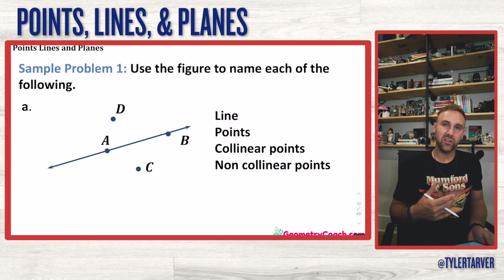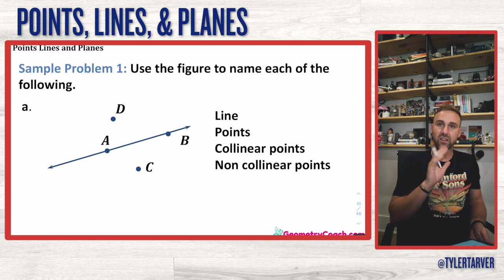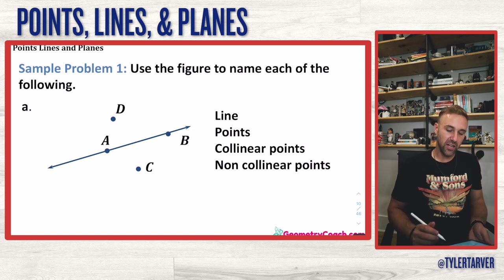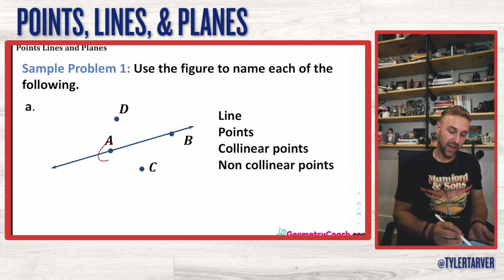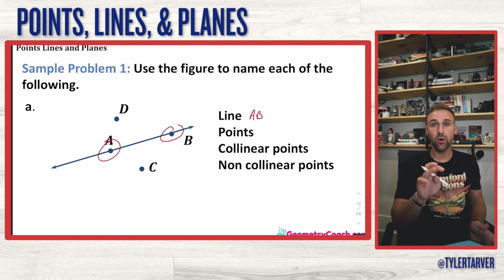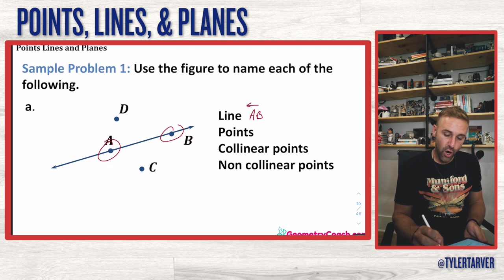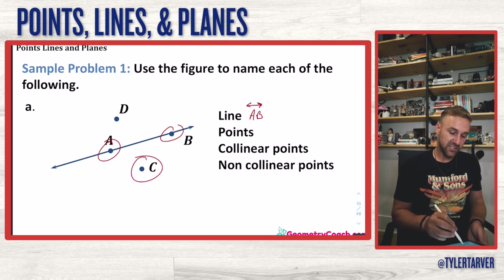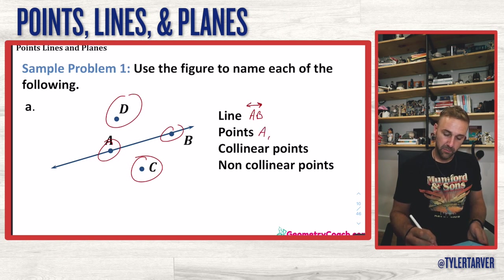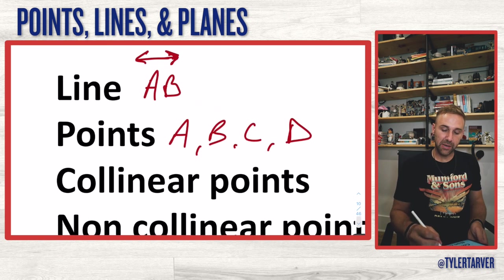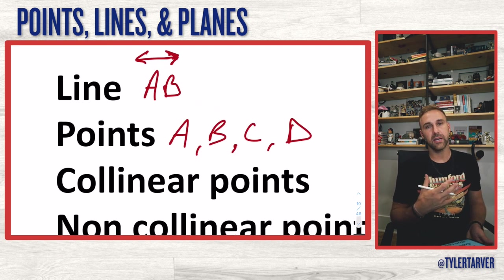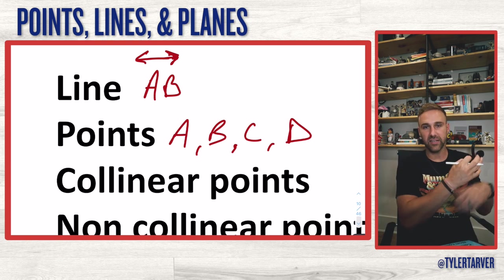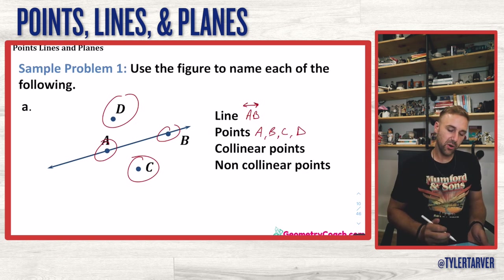Let's do some example problems — you can pause and work the problem before checking the answer. Using the figure to name each of the following: first, I want to name this line. I need to look at what points are on this line — A is on the line and B is on the line. So line AB with arrows above it, because it extends forever. For points, we've got A, B, C, and D, separated with commas since they are separate points.